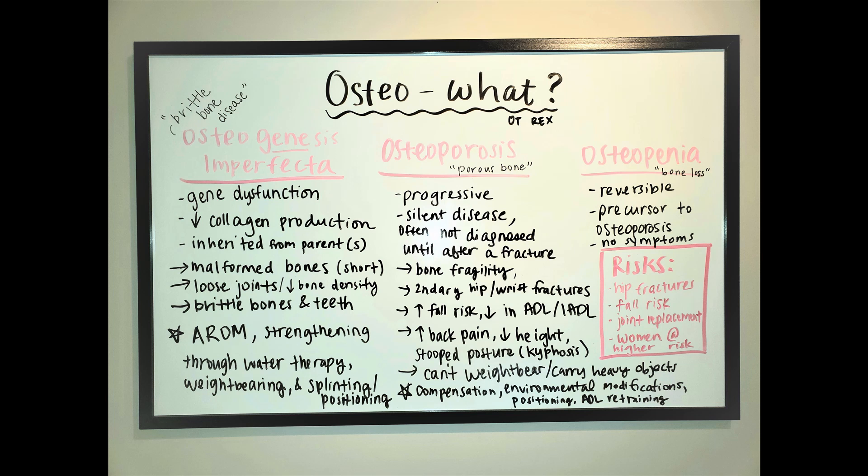This can be inherited from either or both of our parents, and what happens is our collagen production is very low. Collagen is a protein that helps strengthen our bones, so when we don't have enough collagen production it can lead to fractures and trauma to our bones when weight-bearing. This leads to malformed bones — not only brittle but short — and our joints will be loose with overall lower bone density.